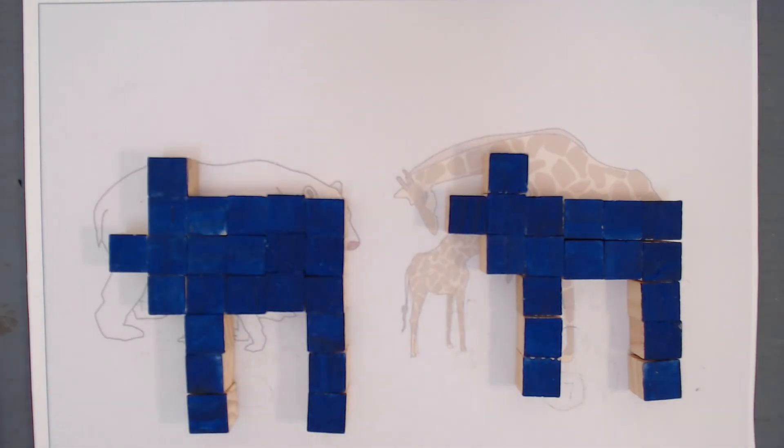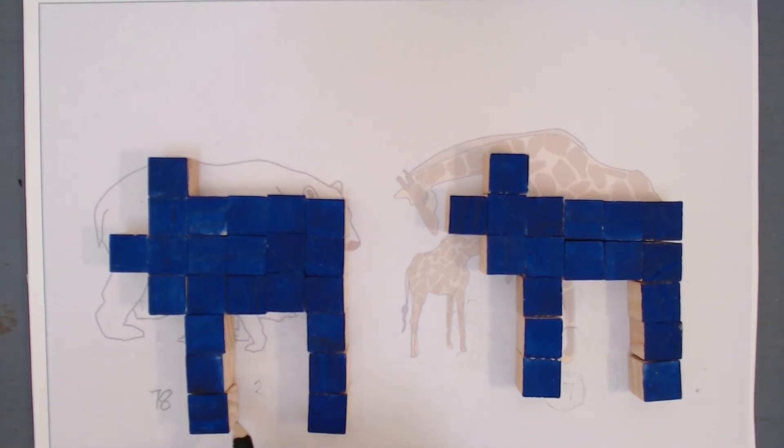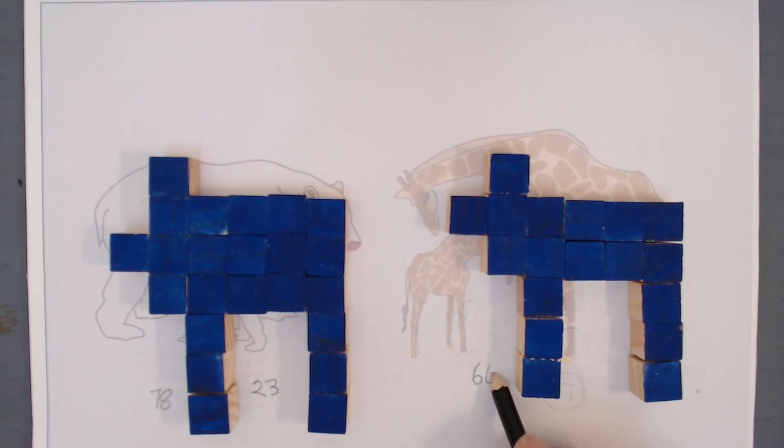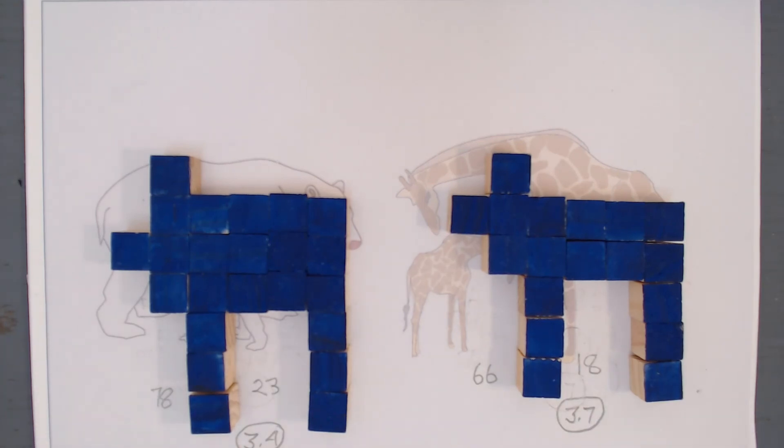So what about this one? Well, the adult has a surface area of 78 units and a mass of 23. Remember, it has 23 blocks. The young animal has a surface area of 66 units but a mass of 18 units. So the adult has a surface area to mass ratio of 3.4, whereas the young animal has a surface area to mass ratio of 3.7. This means that the younger animal has a greater heat loss per kilogram than its parents.